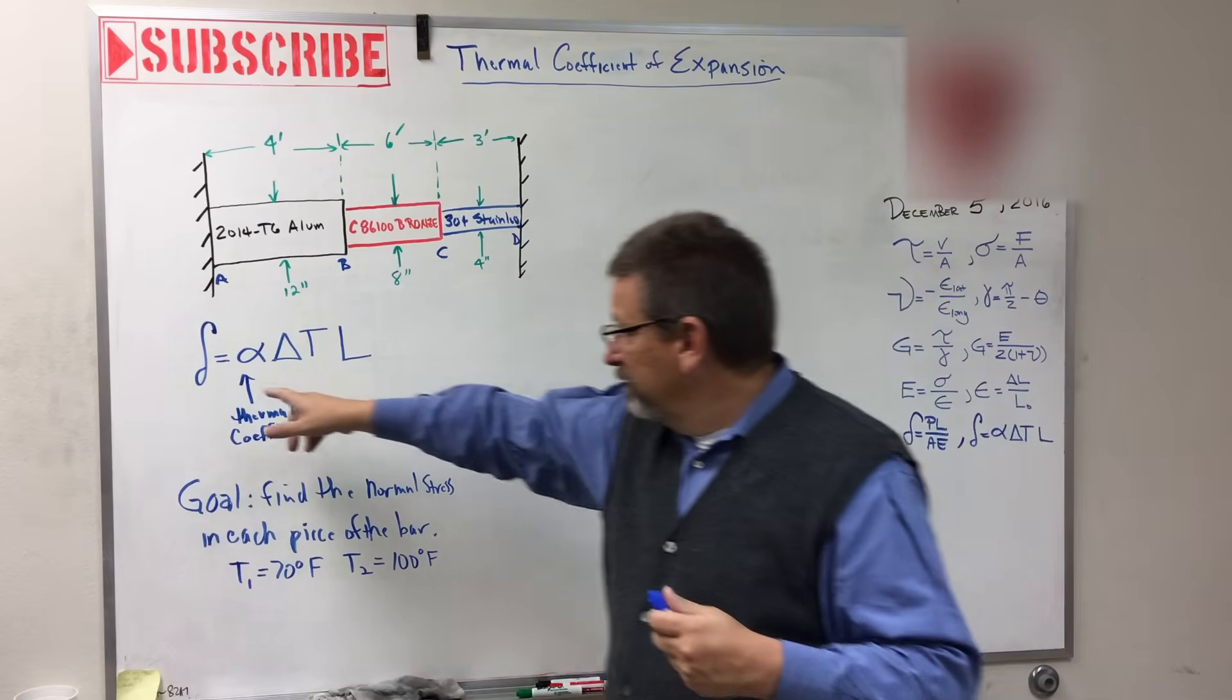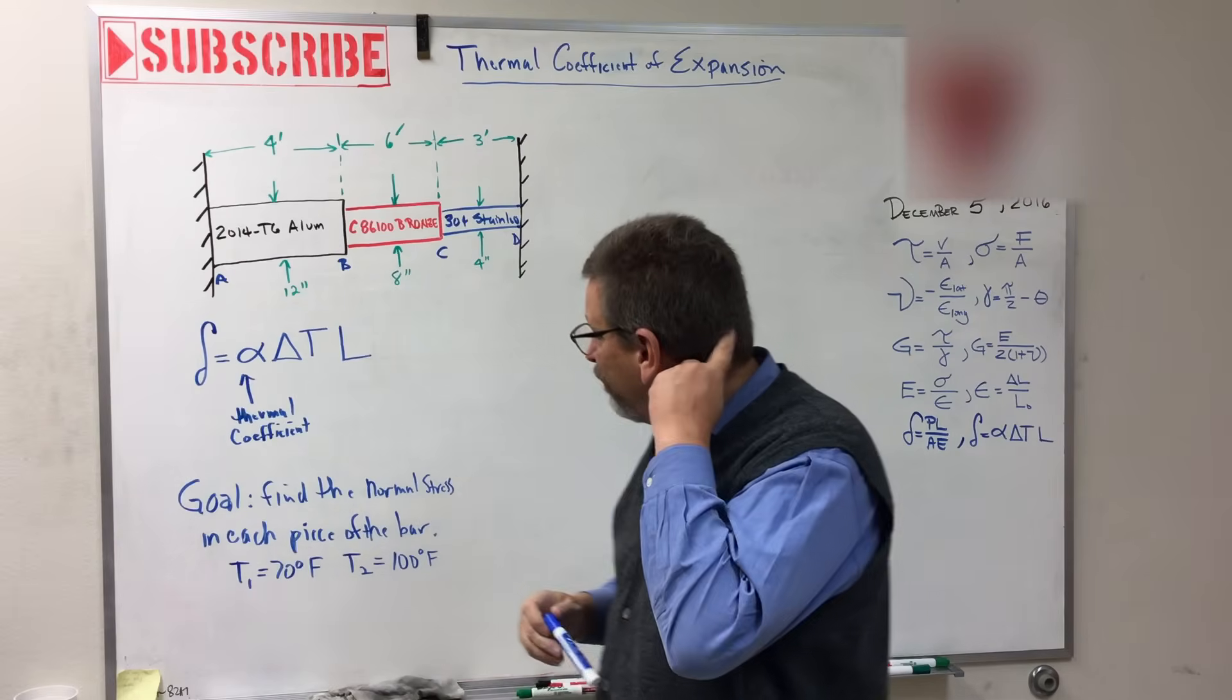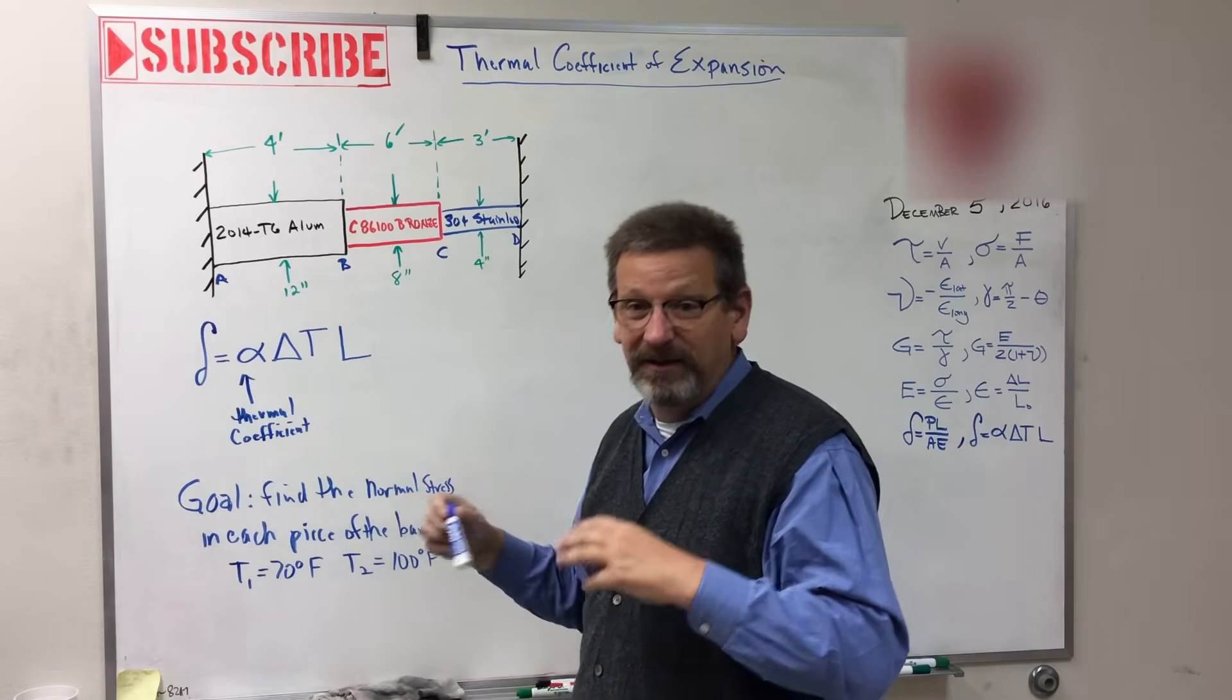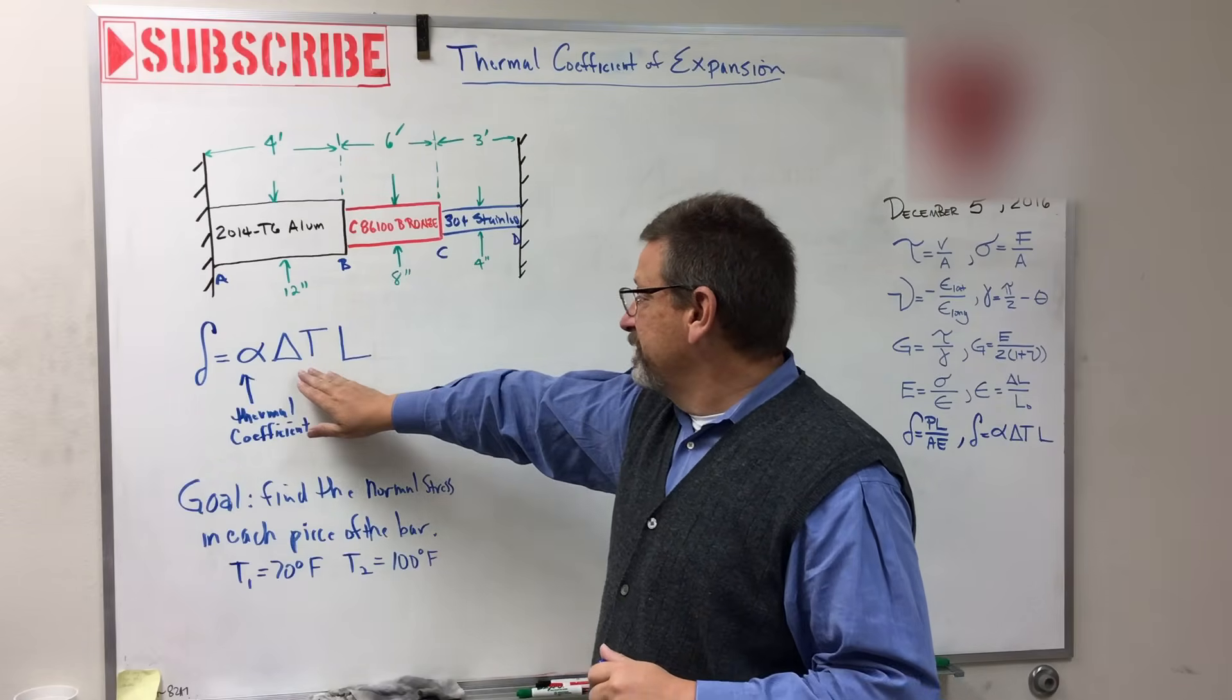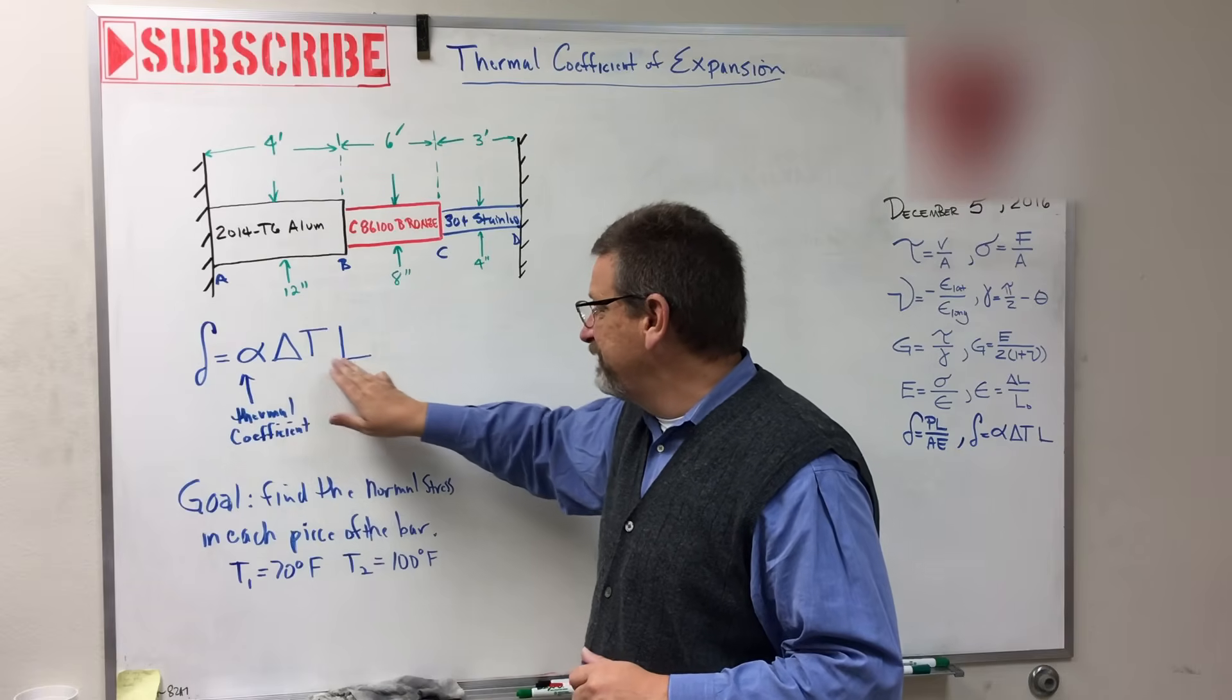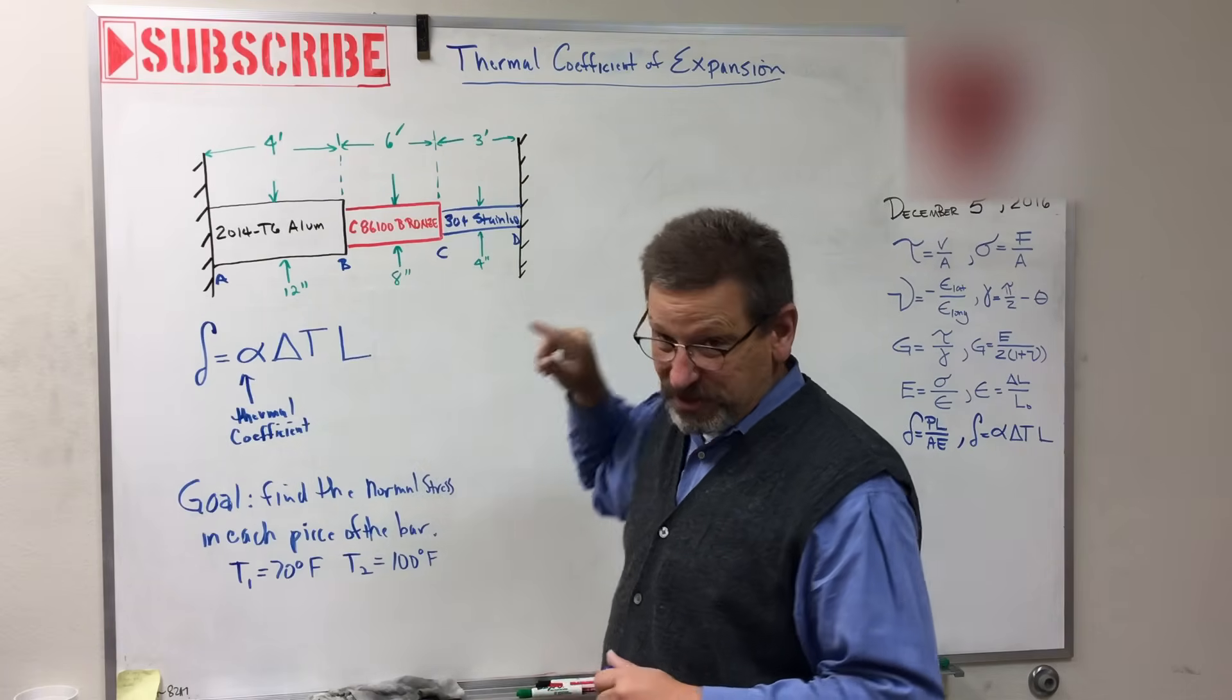Okay, and what do we call that growth? Remember we call it delta, just a change in length. If you remember from last, so this is a new equation. By the time we get to the end of the book, we'll have a hundred equations, y'all. So delta equals alpha delta T times L. So this is the equation for thermal expansion.